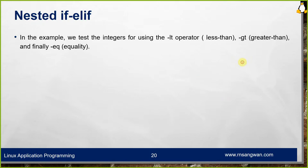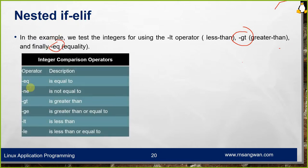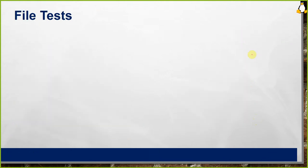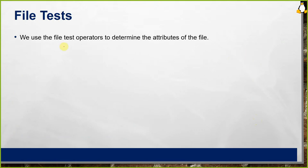Nested if statements are supported — in examples, we use -lt (less than), -gt (greater than), and -eq (equality). File test operators let you determine attributes of a file: -a (existence), -f (regular file), -s (non-zero size), -d (directory), -h (symbolic link), -r (readable), -w (writable), -x (executable). These can be used in conditional execution based on file properties.